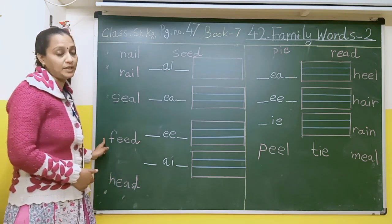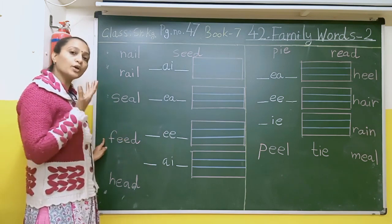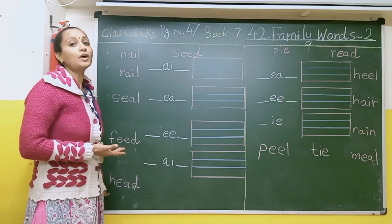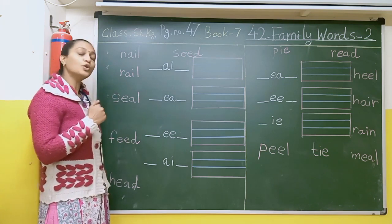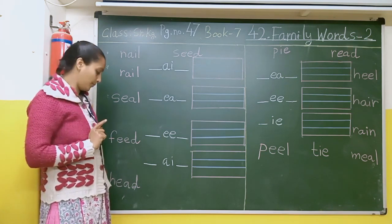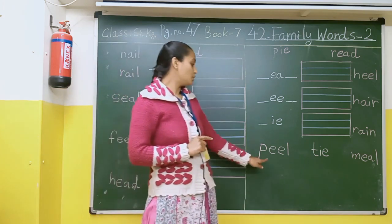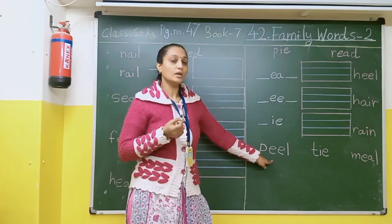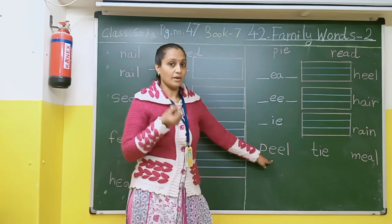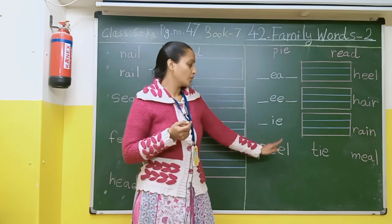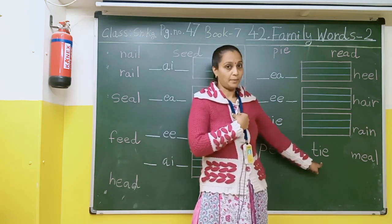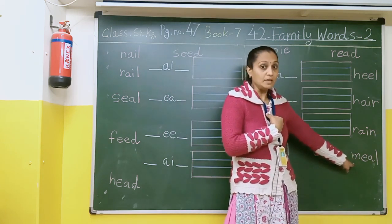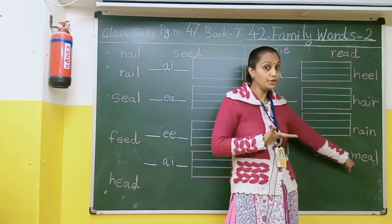Here there is an image of a field — yahan ek jo child hai, woh dog ko khaana kha raha hai. That is called field. After that, here there is an image of a head — yahan is child ka jo head hai. After that, here there is an image of a bird.